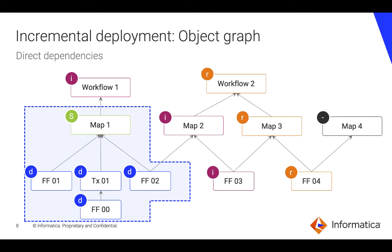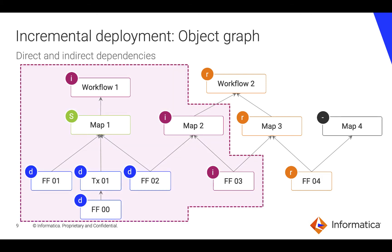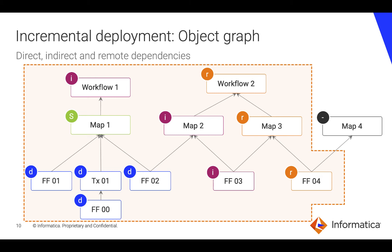Now let's talk about indirect dependencies. Indirect dependencies are those that are not part of the selected objects but will be impacted as a result of the selected objects. As you can see, map two uses the same data object as map one. You as a user have a choice to either redeploy the indirect objects or to only deploy the selected and direct dependencies and let the indirect dependencies be revalidated. There is also a third level — remote dependencies — and you have a choice to bring those in as well, to absolutely ensure that all dependencies are resolved and all dependent objects are completely redeployed.